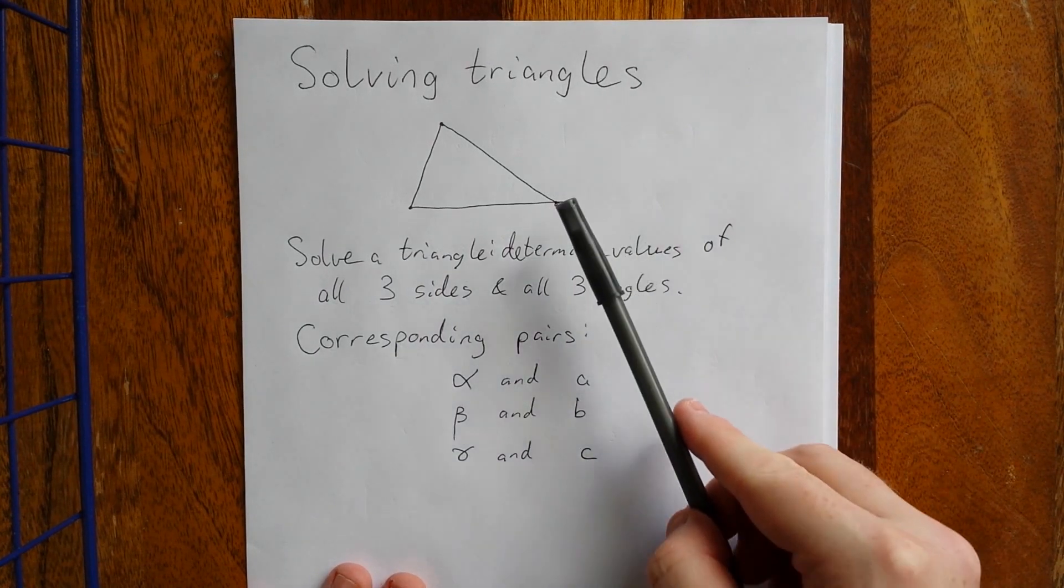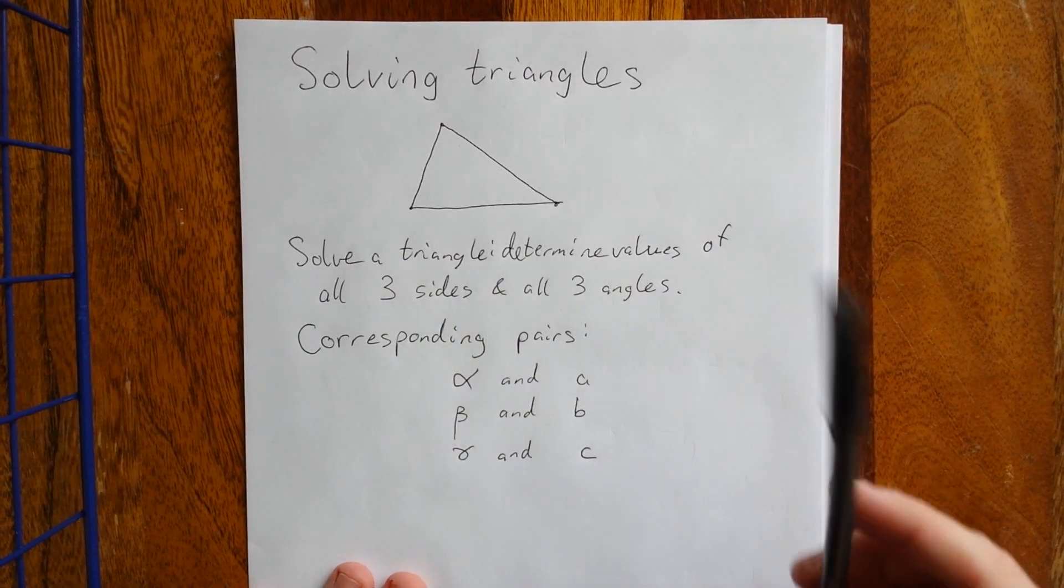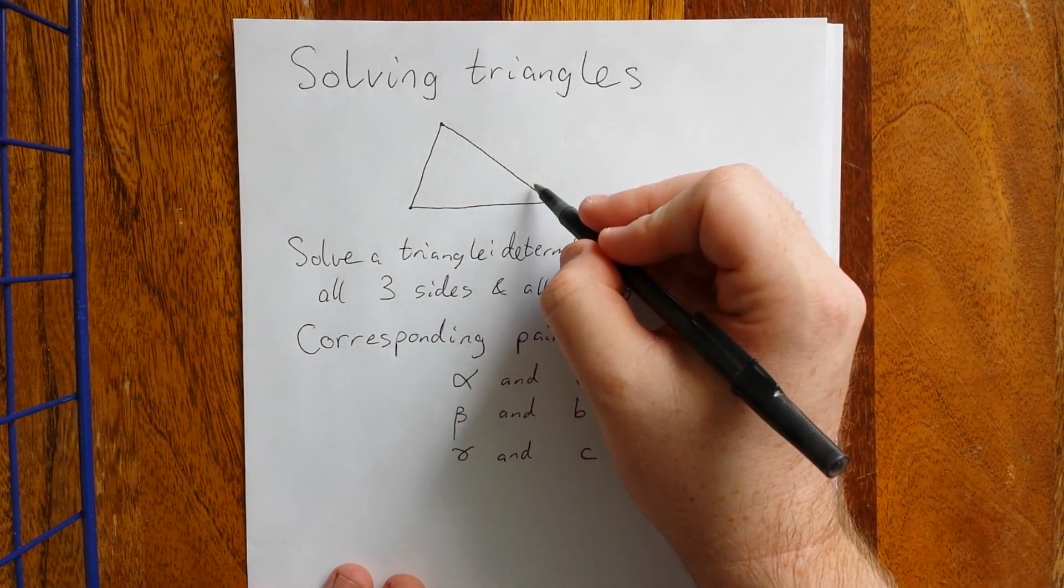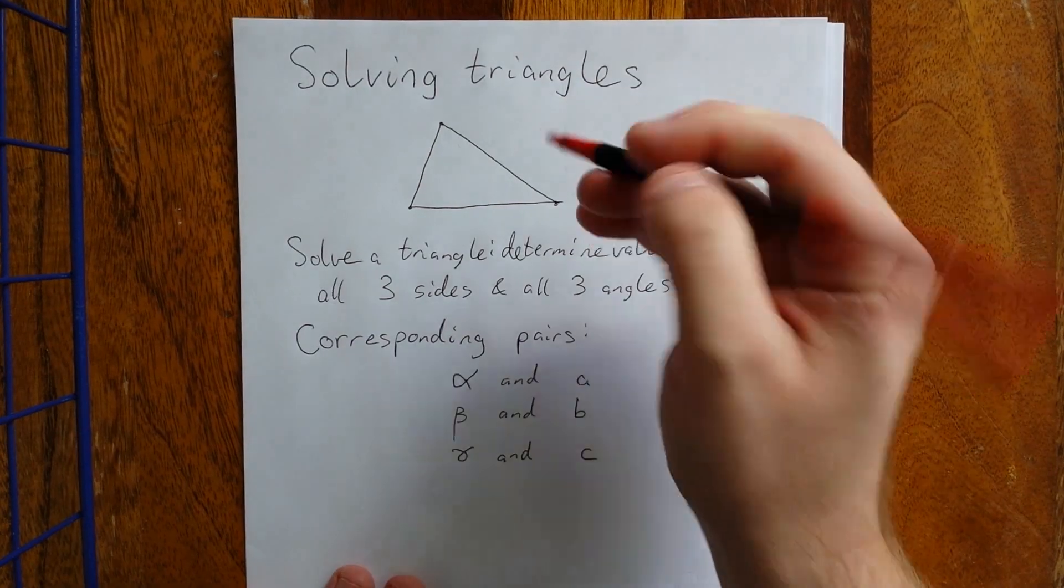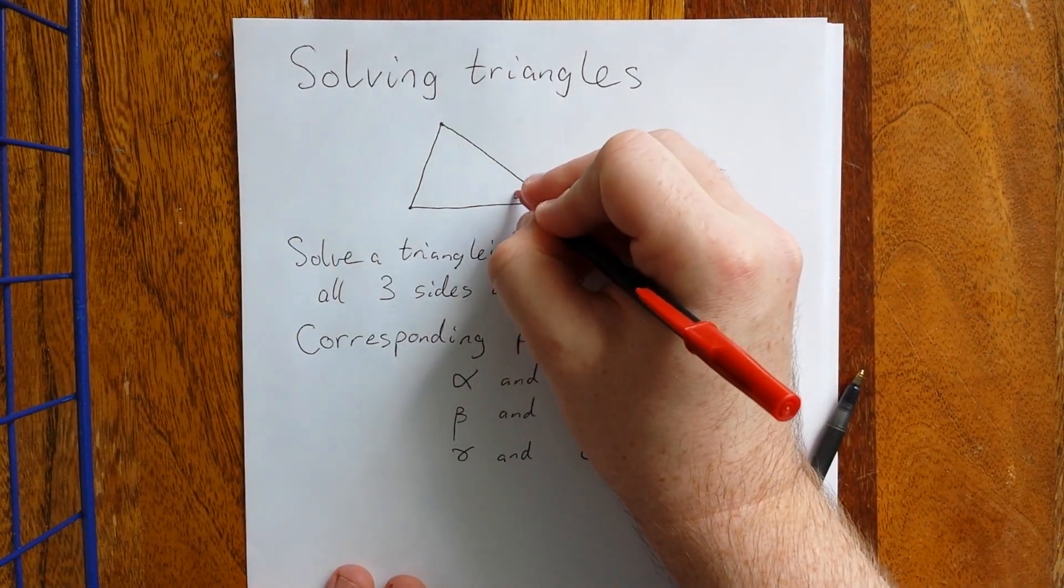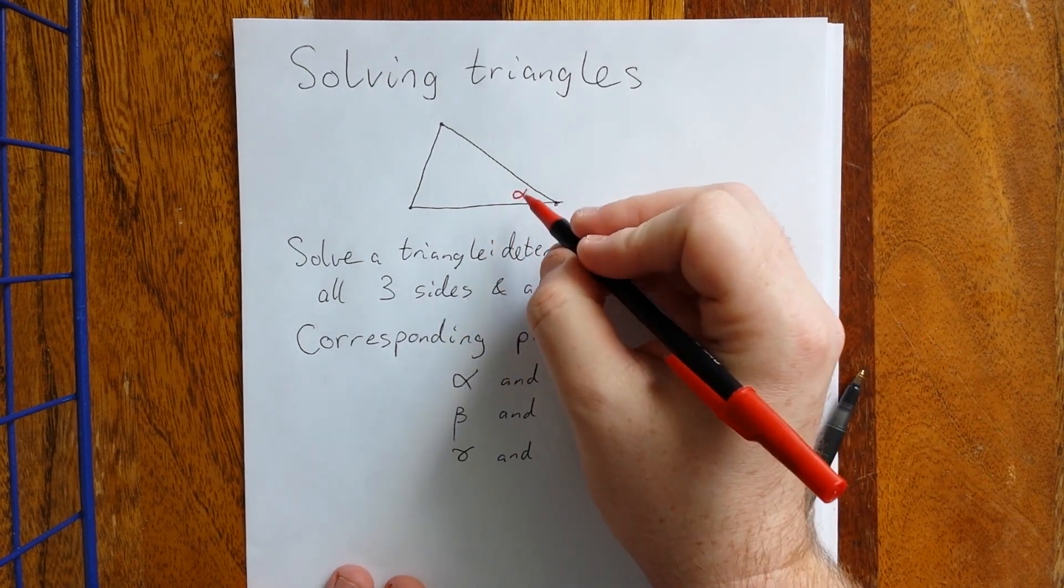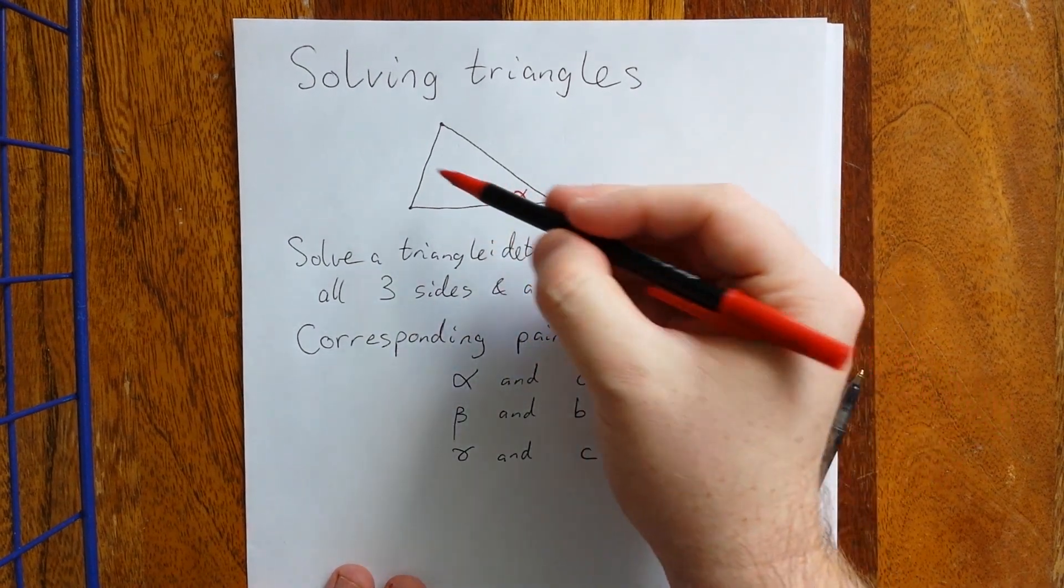What corresponding pairs are: in your triangle we have three sides and three angles. For every angle, it's comprised of two sides. A corresponding angle-side pair will be an angle and the side across from it.